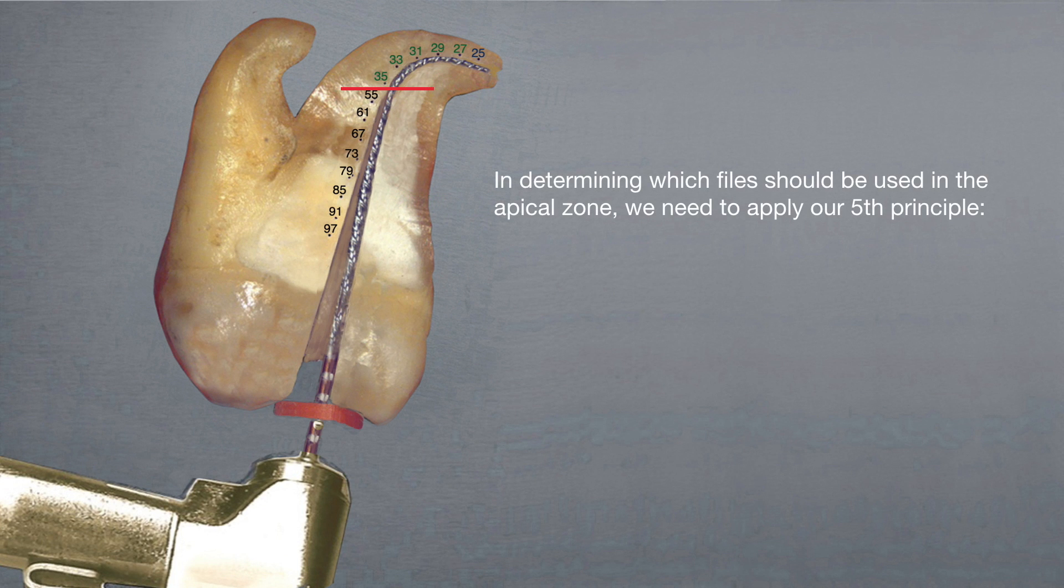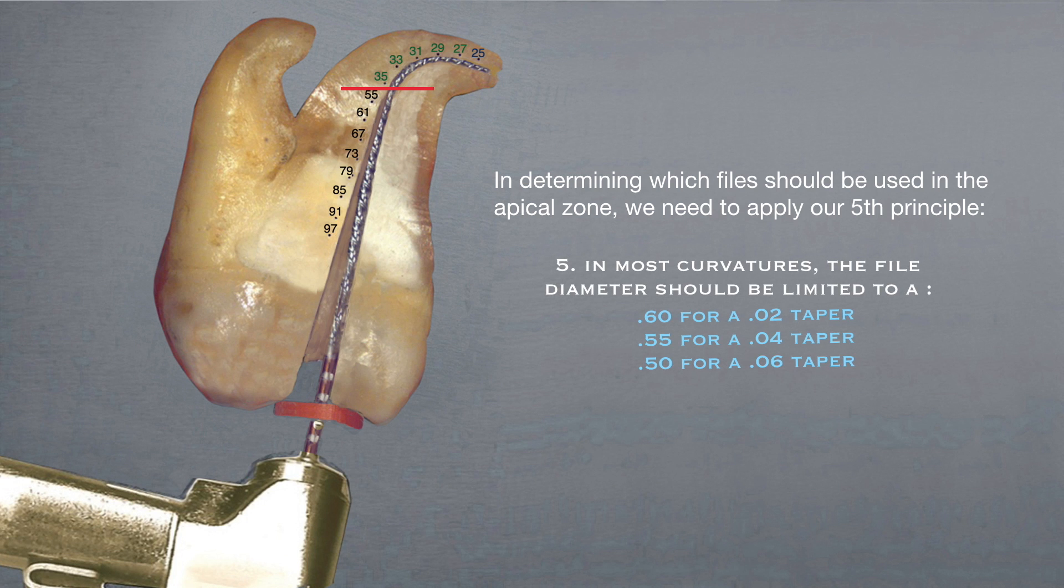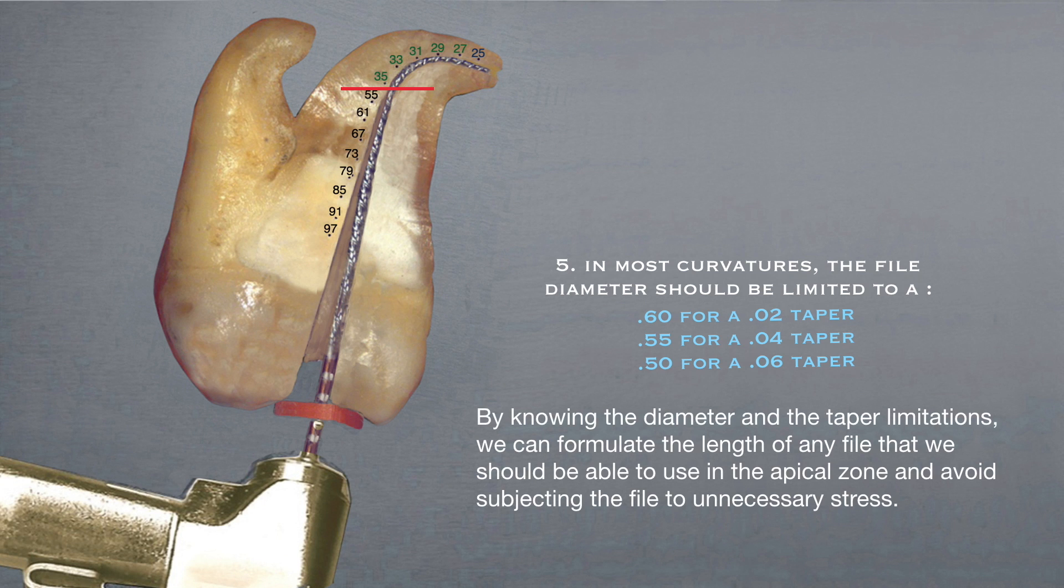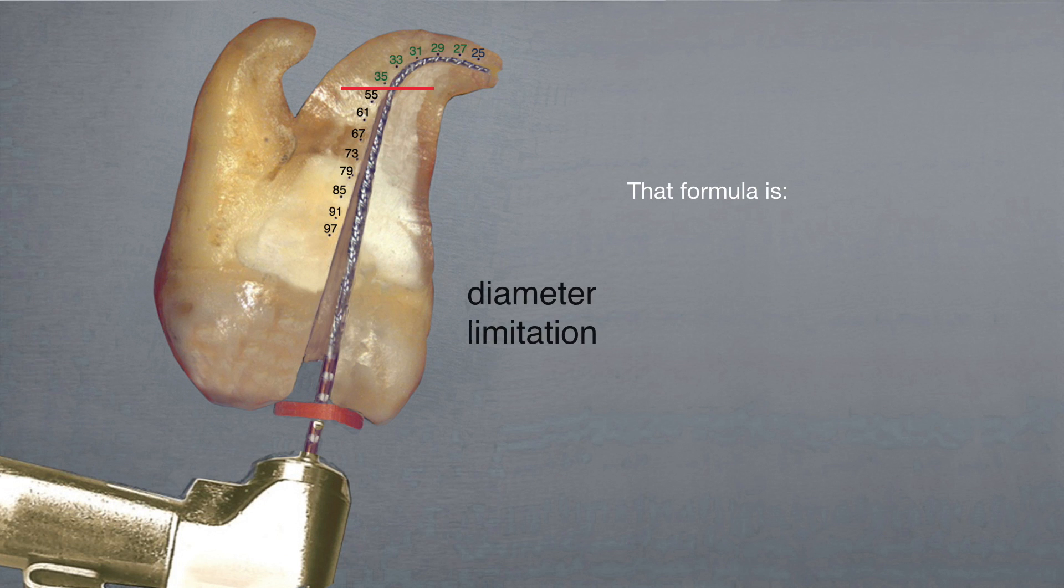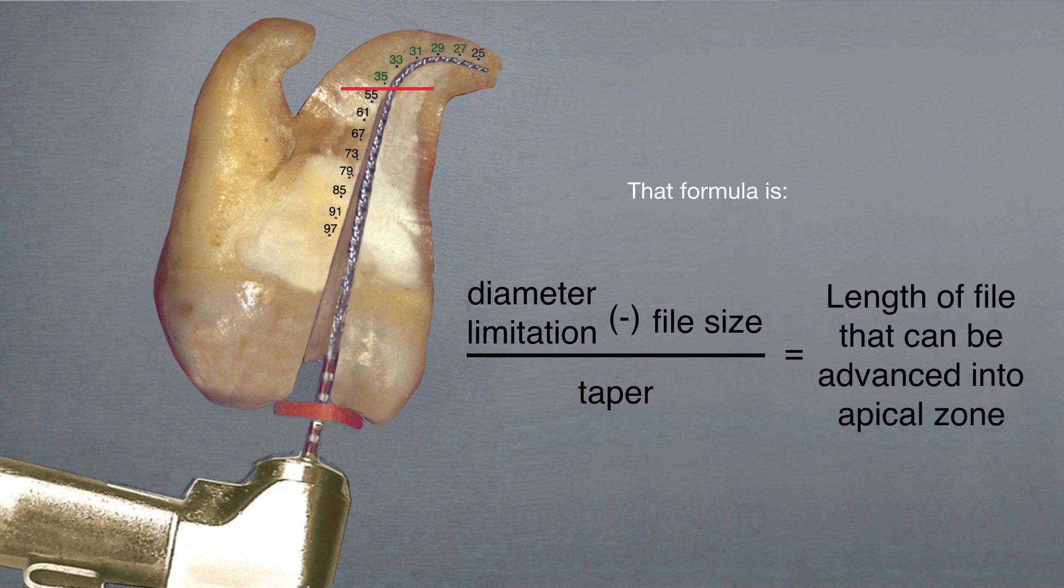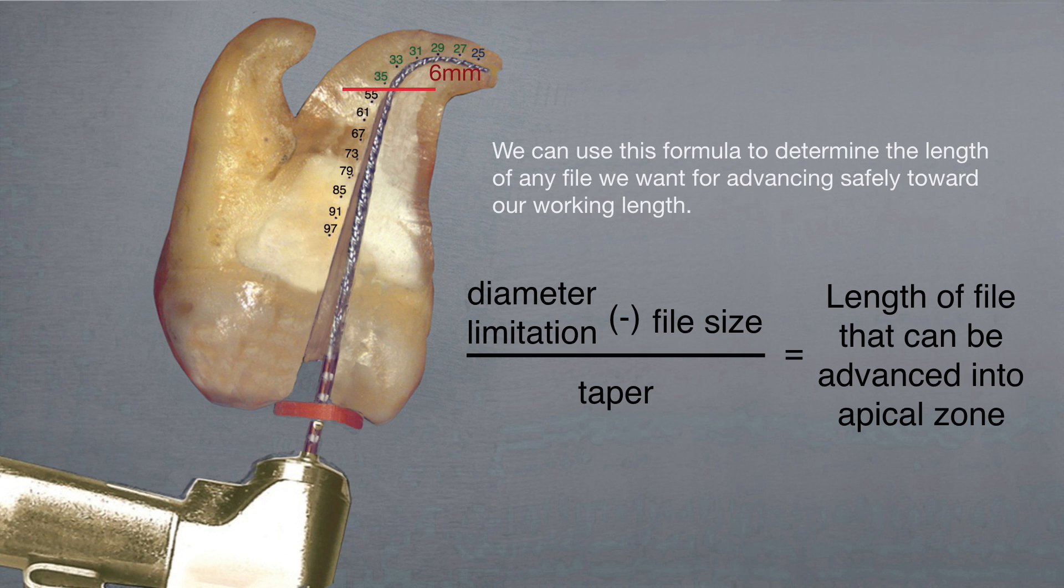In determining which files should be used in the apical zone, we now need to apply our fifth principle. By knowing these diameter and taper limitations, we can formulate the length of any file that we should be able to use in the apical zone and avoid subjecting the file to unnecessary stress. That formula is diameter limitation minus file size divided by taper, and that will give us the length of the file that can be advanced into the apical zone. We can use this formula to determine the length of any file size we want for advancing safely toward our working length.